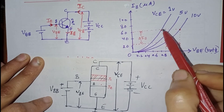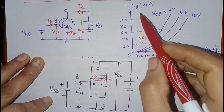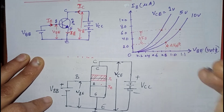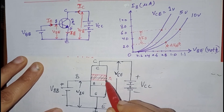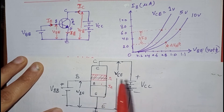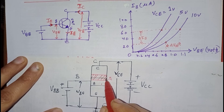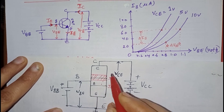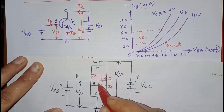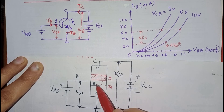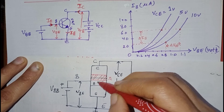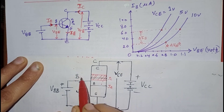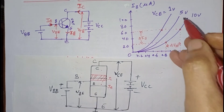The reason for the curves shifting right and base current decreasing with increasing VCE is as follows: increasing VCE increases the reverse biasing at the collector junction, which widens the depletion region. Since the base region is lightly doped, the depletion region penetrates more into the base, reducing the effective base width. Fewer electrons and holes recombine in the base, so more electrons reach the collector. That is why IB decreases and the curves shift to the right.